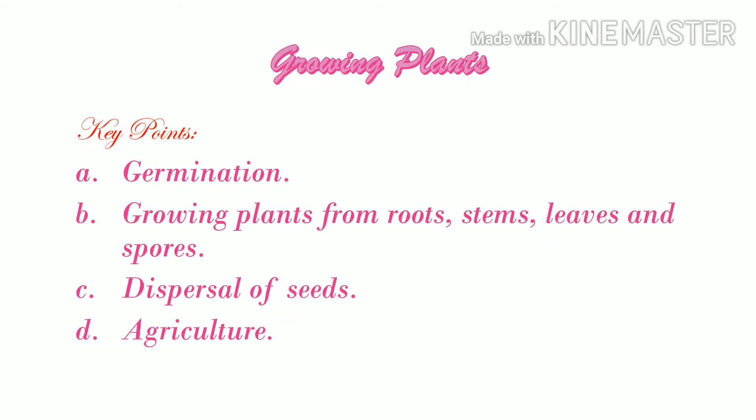The key points are: A. Germination. B. Growing plants from roots, stems, leaves and spores. C. Dispersal of seed. D. Agriculture.